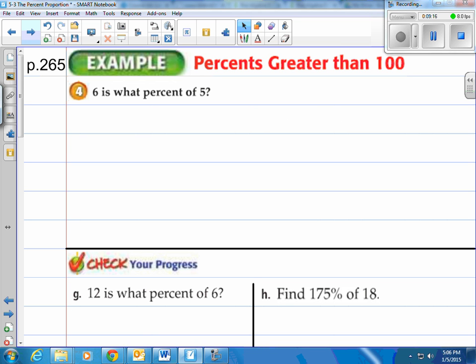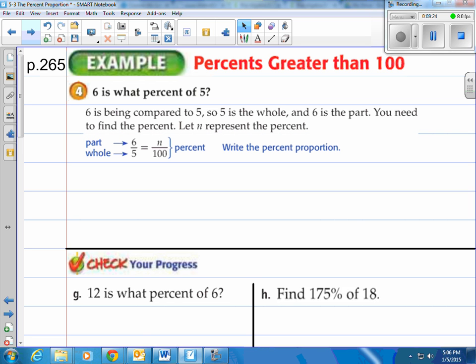All right. Percents greater than 100 shouldn't scare you. You use the exact same system that we have. But they like to show it to you here in the book. So let's talk about it. It says six is what percent of five? Well, six is being compared to five. So five is the whole, and six is the part. And it's a big part. It's actually more than the whole. You need to find the percent. So again, let n represent the percent.